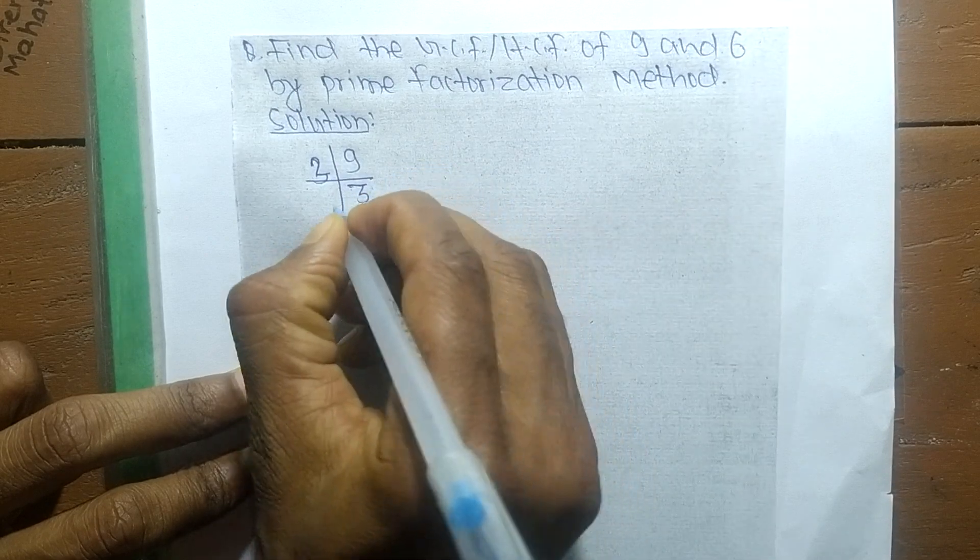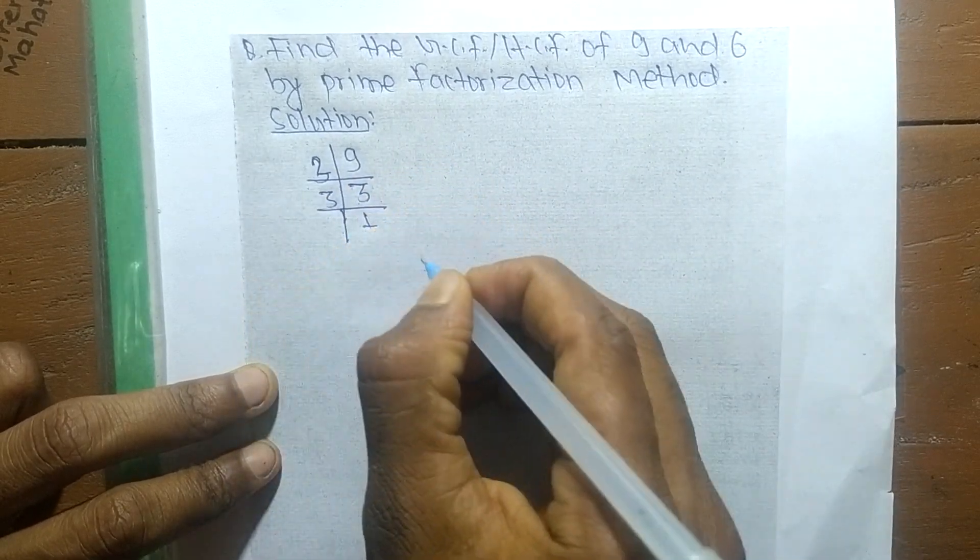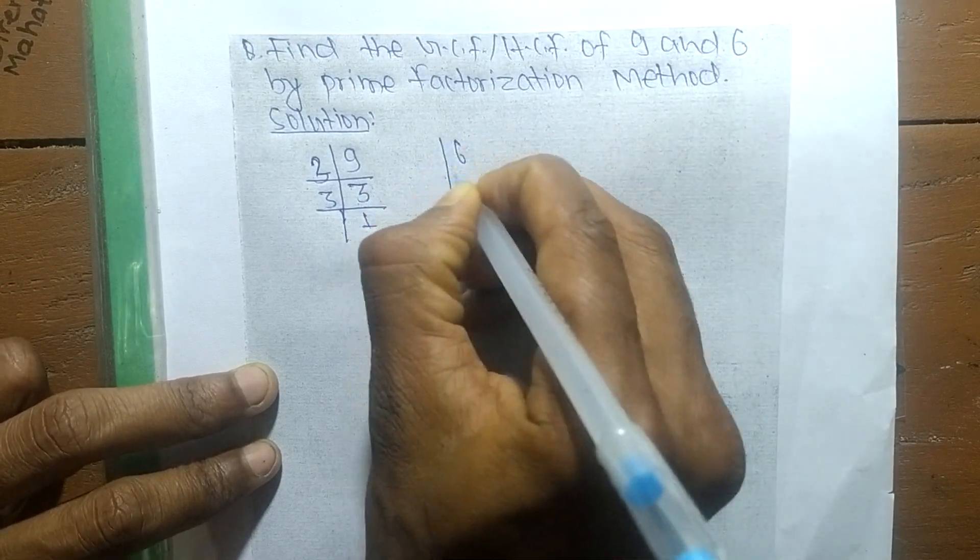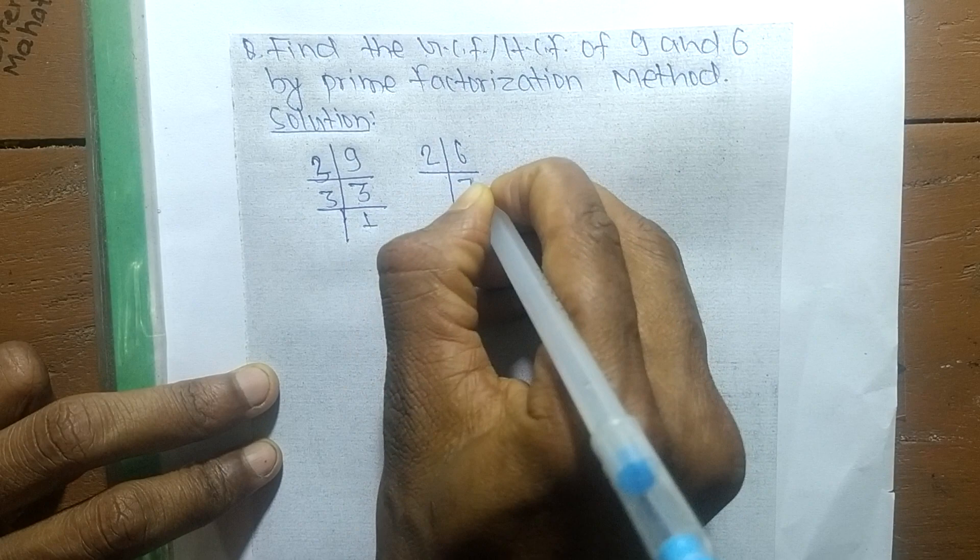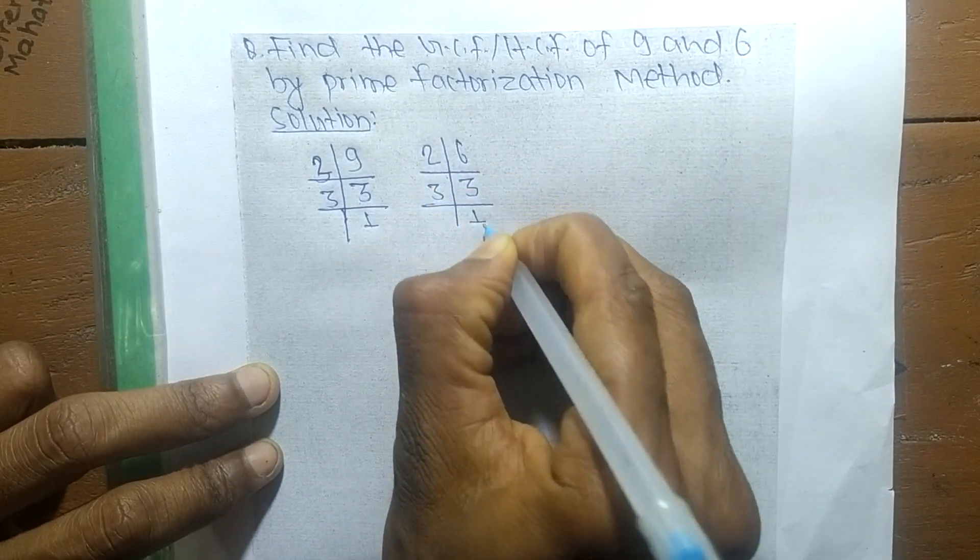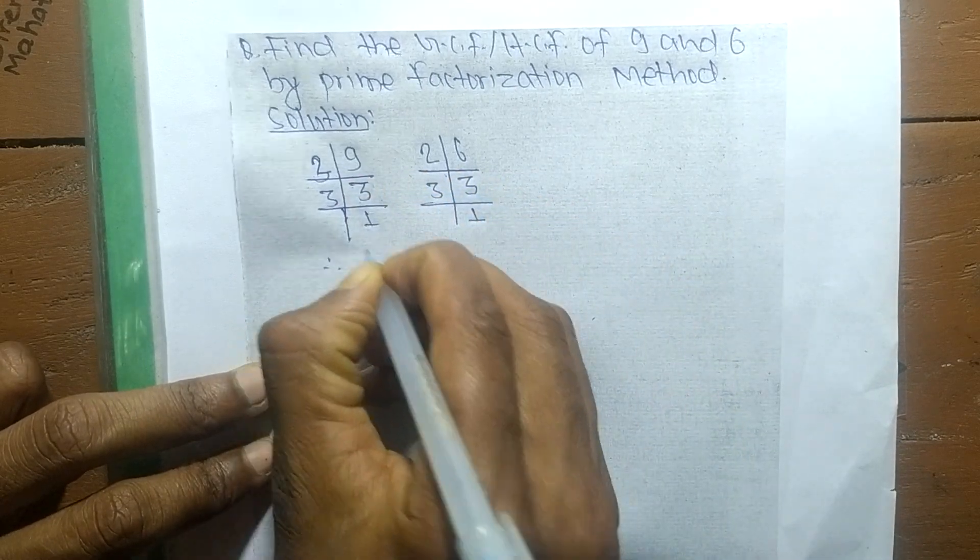3 times 3 equals 9, and 3 times 1 equals 3. In the same way, the prime factors of 6 are 2 times 3 equals 6, and 3 times 1 equals 3.